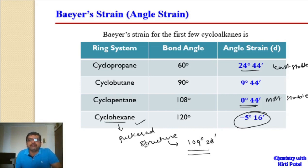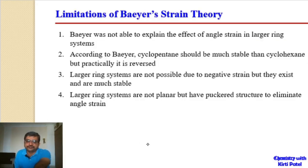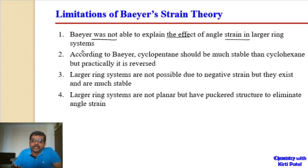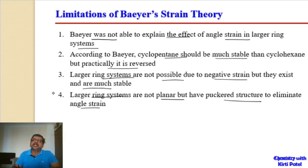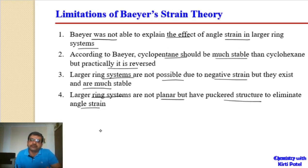Angle strain can be relieved by forming a puckered structure, which was not predicted by Baeyer's theory. The limitations of Baeyer's theory are: it cannot explain larger ring systems; it predicts larger rings should not exist; and it incorrectly predicts cyclopentane to be more stable than cyclohexane. Baeyer's theory is applicable for lower ring systems like cyclopropane, cyclobutane, and cyclopentane, but not for cyclohexane and beyond.